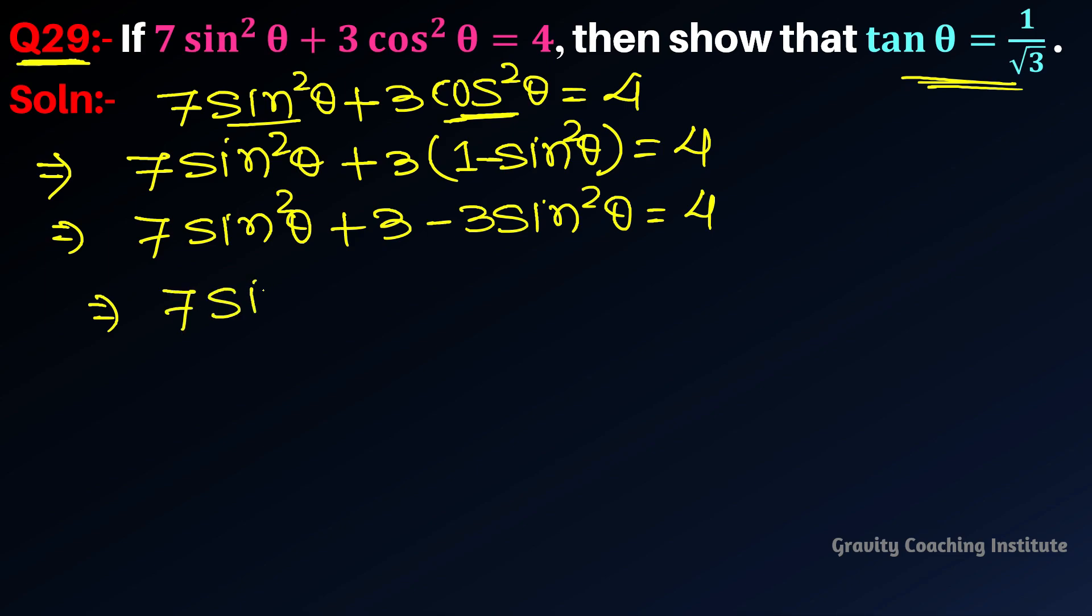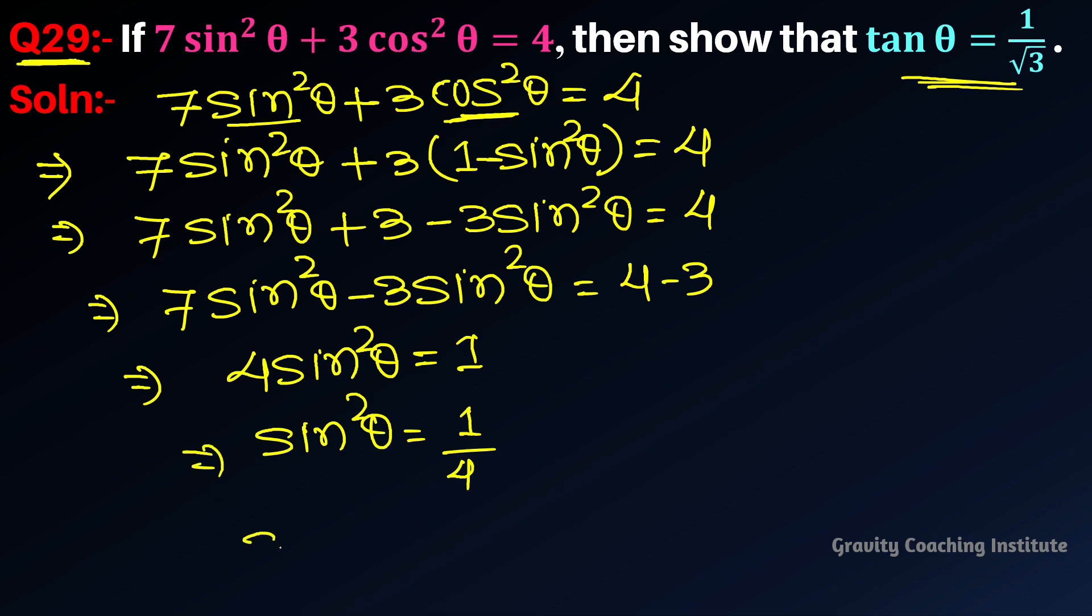Moving constants to one side: 7 minus 3 is 4, so we get 4sin²θ = 1. Therefore sin²θ = 1/4, and sin θ = √(1/4), which gives us sin θ = 1/2.